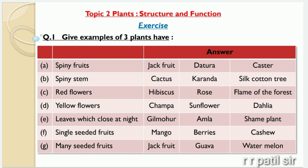Flame of the forest means palash. Then the next plants having yellow flowers are champa, sunflower and delia. Also the plants having leaves which close at night are gulmohor, amla and shem plant. Then the next is single seeded fruits — the plants having single seeded fruits are mango, berries and cashew.